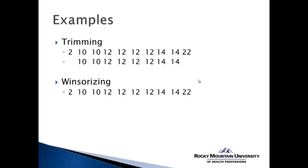For Winsorizing, using that same data set, let's say the scores of 2 and 22 are not mistakes — they're true values but true outliers. We transform the 22 into a 14, which is the next closest score that's not an outlier, and we transform the 2 into a 10, the next closest non-outlier score. Our sample now has the same number of subjects, but those outliers are eliminated. We only do this when we have small numbers of outliers and know the values collected are legitimate, unbiased sample data.